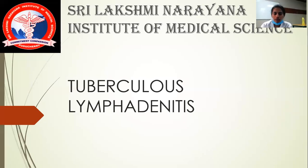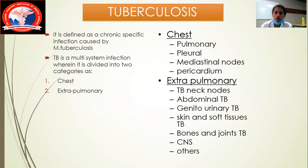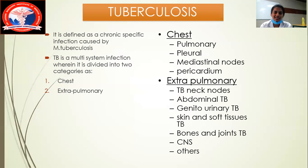Today's topic is tuberculosis lymphadenitis. Tuberculosis is a chronic specific infection caused by Mycobacterium tuberculosis. TB is a multi-systemic infection which can be divided into categories: chest tuberculosis and extra-pulmonary tuberculosis. Chest tuberculosis includes pulmonary, pleural, mediastinal nodes, and pericardium.